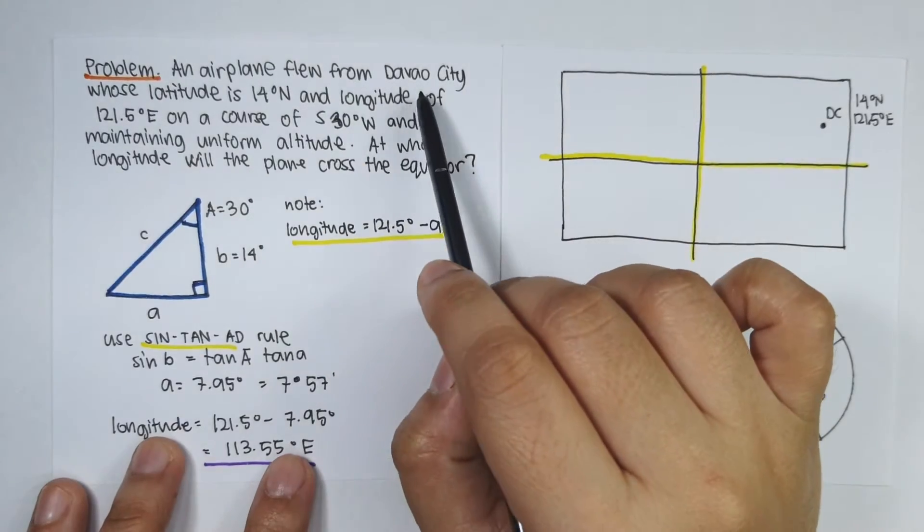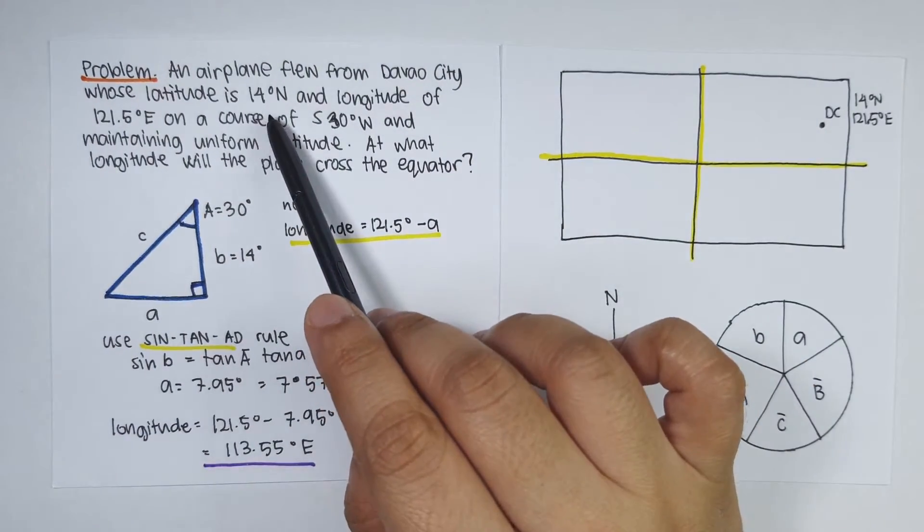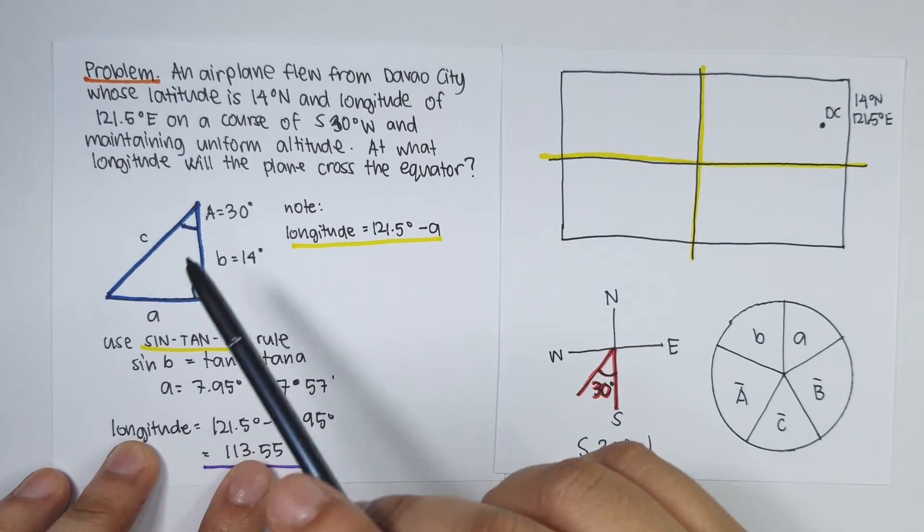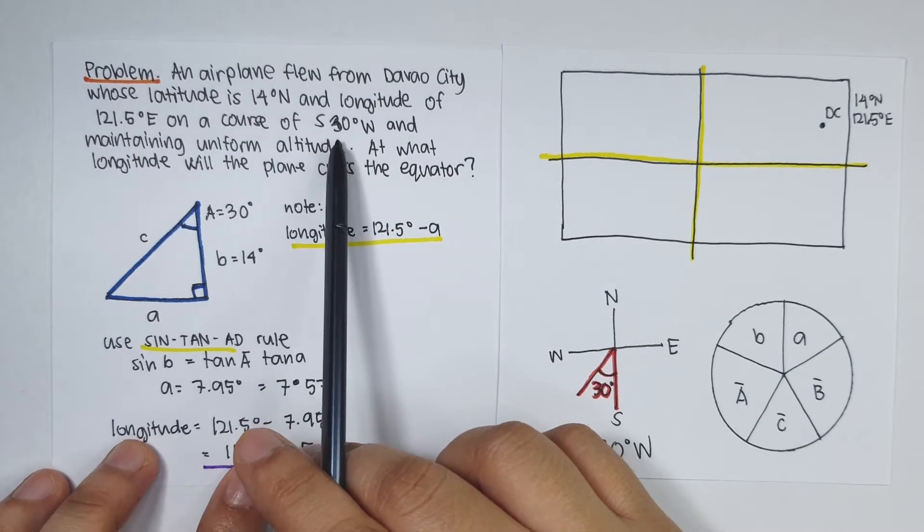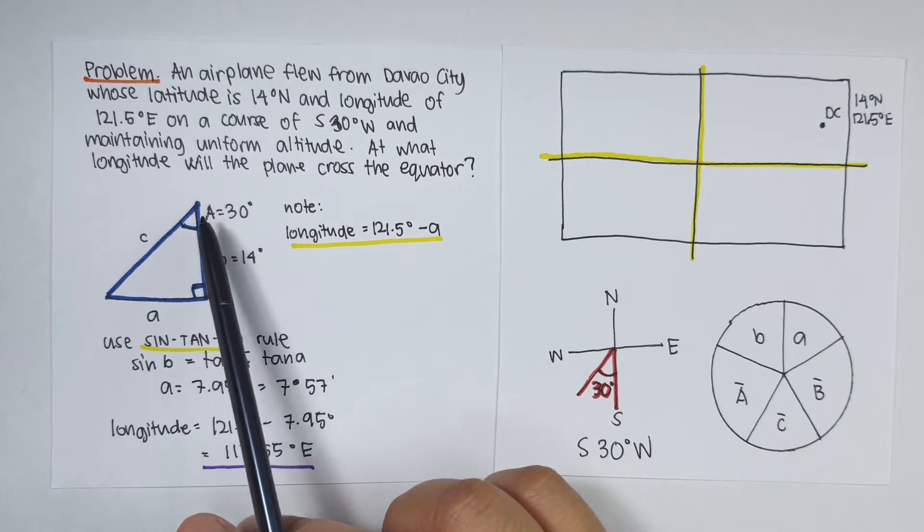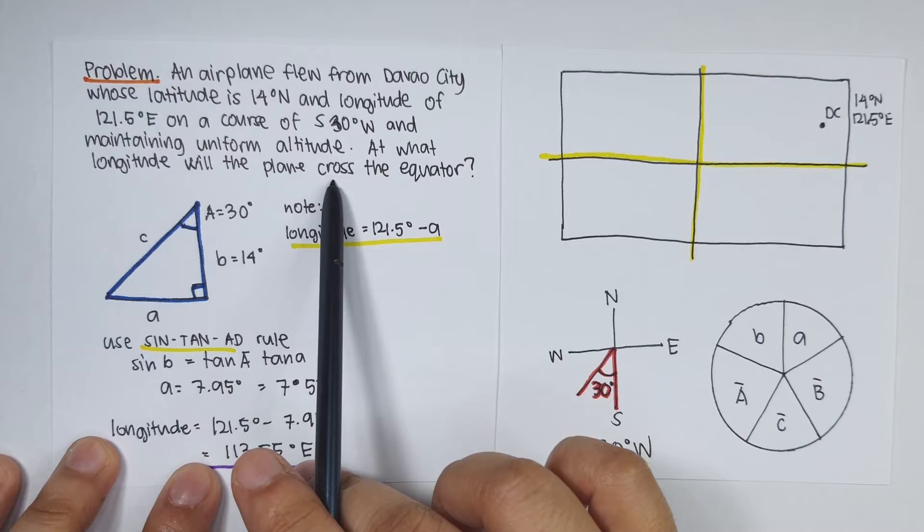An airplane flew from Davao City whose latitude is 14 degrees north and longitude of 121.5 degrees east on a course of 30 degrees west of south and maintaining uniform altitude. At what longitude will the plane cross the equator?